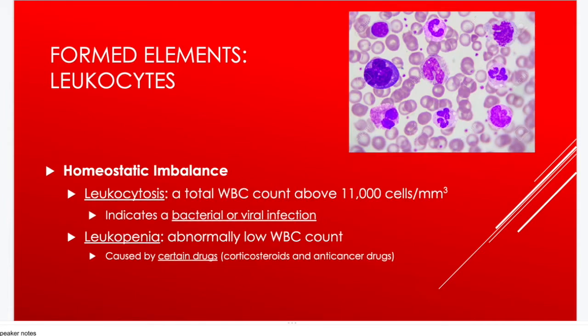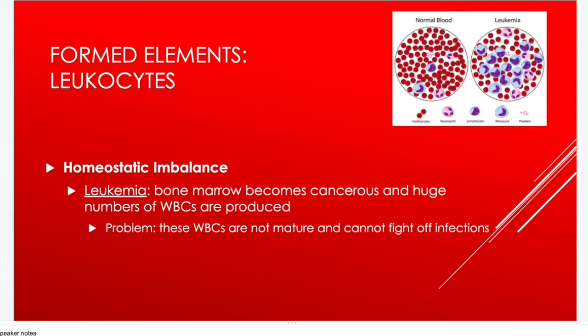If a blood test shows an elevated white blood cell count — over 11,000 per drop — that's called leukocytosis, usually a sign of bacterial or viral infection. Leukopenia is a very low white blood cell count; certain drugs like chemotherapy can cause it, making patients more prone to other infections. Leukemia is a bone marrow cancer where huge numbers of white blood cells are produced.